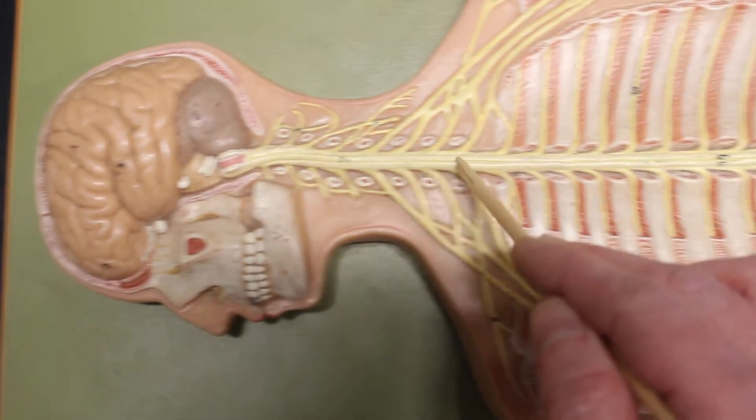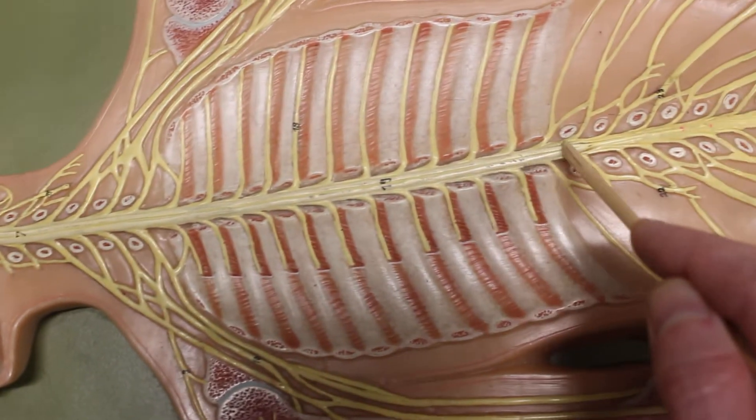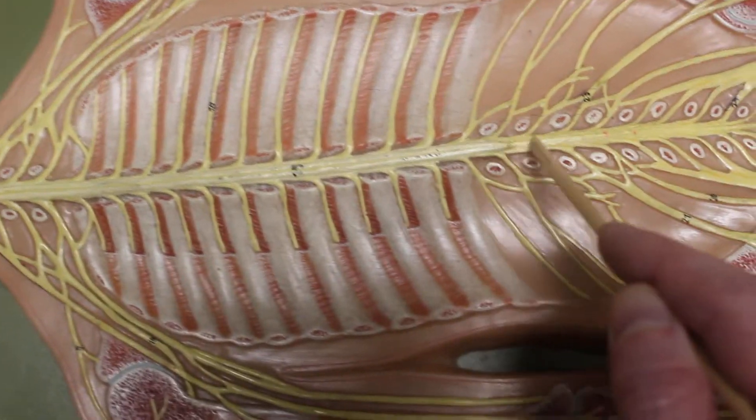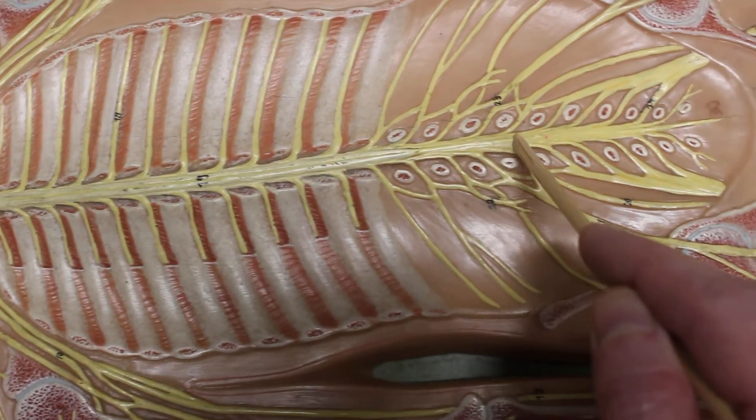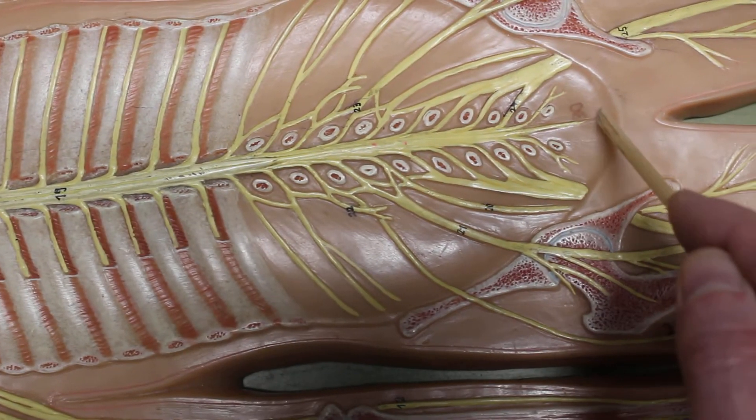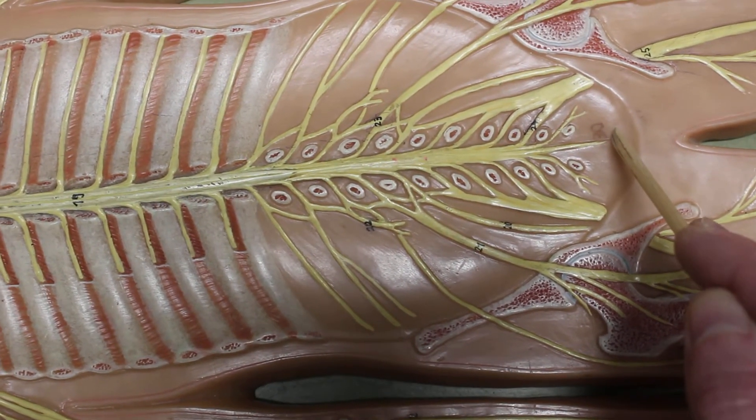Leading to the spinal cord. The spinal cord ends with the conus medullaris. Continuing in the vertebral column is the cauda equina. This is cauda equina. That ends at a point at the filum terminale.